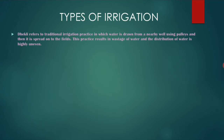Now, types of irrigation. The first one is Delki. Delki refers to a traditional irrigation practice in which water is drawn from a nearby well using pulleys and then spread on the field. In this method, water wastage is very high.